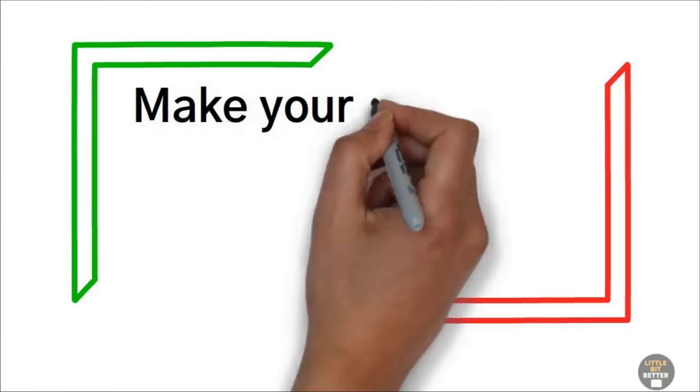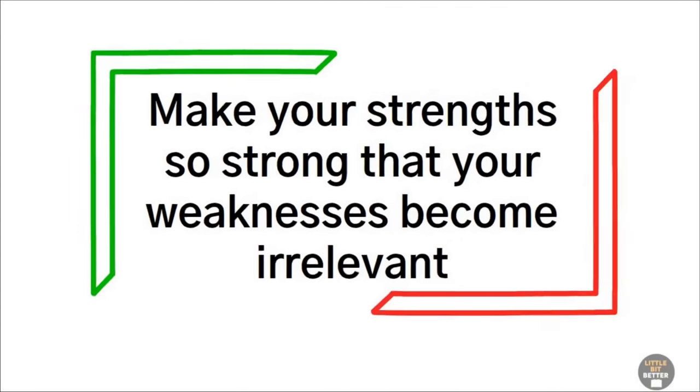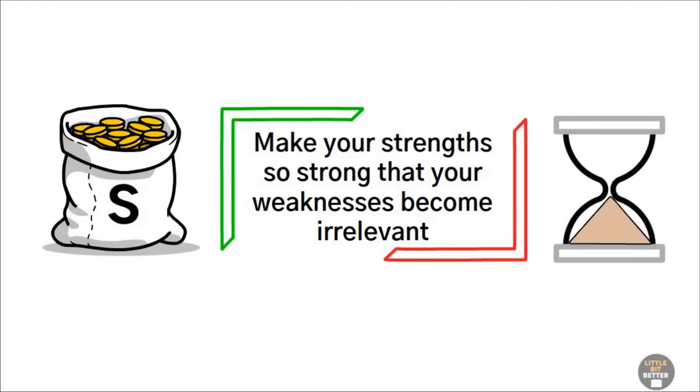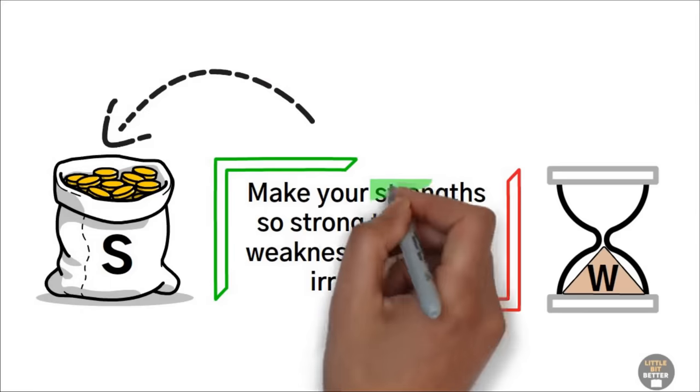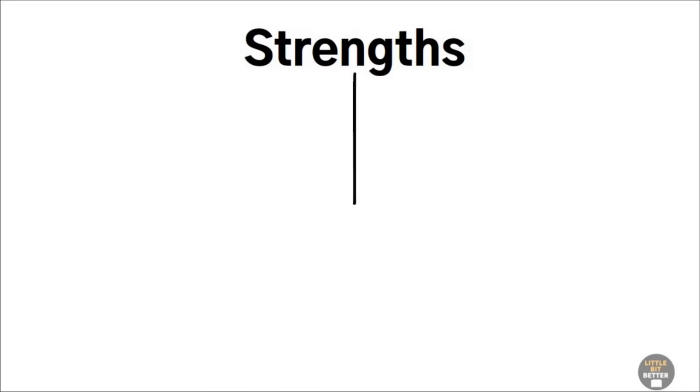He says, make your strengths so strong that your weaknesses become irrelevant. To put it simply, your strengths? Gold. Your weaknesses? Dust. Focus on the gold. You got it? You really did? Good. Let's move on. Now, you know that your strengths matter, but how can you find yours?